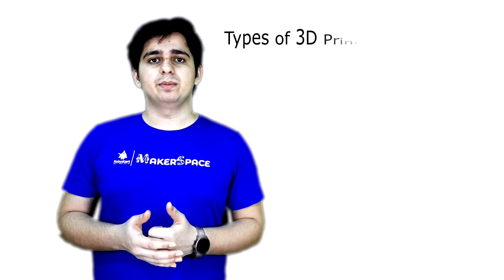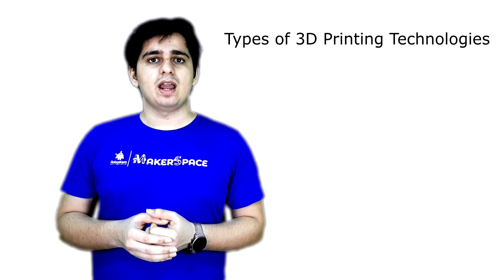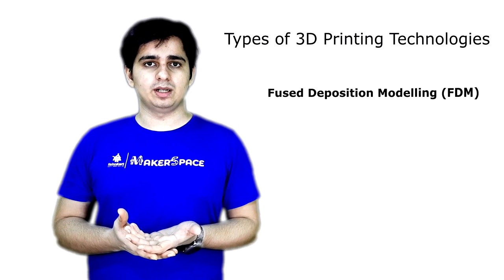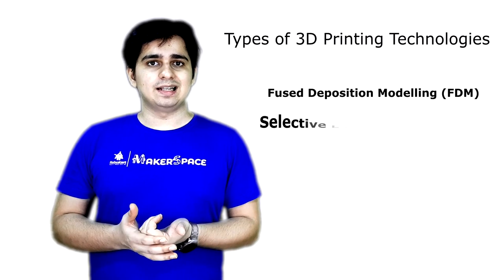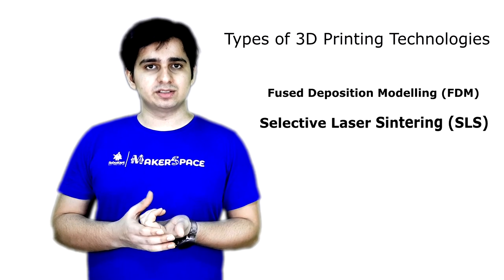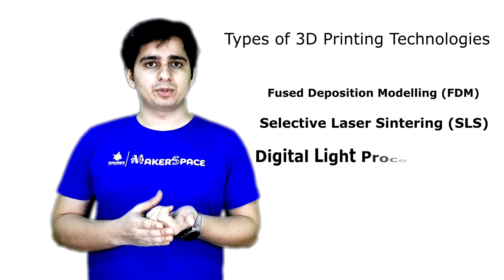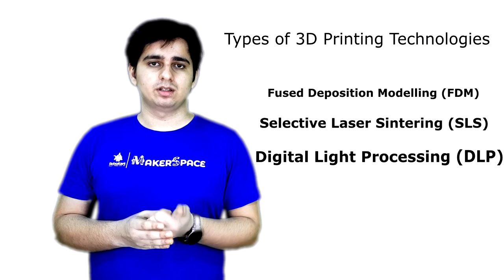There are many types of 3D printing: FDM, SLS (Selective Laser Sintering), and Digital Light Processing. These are all different types, according to different applications.